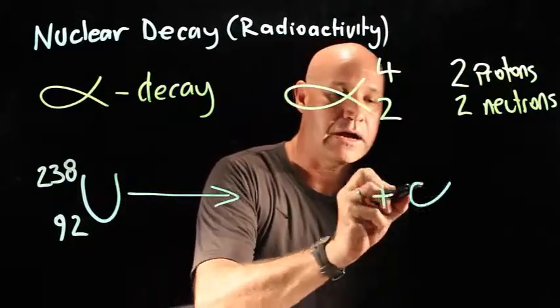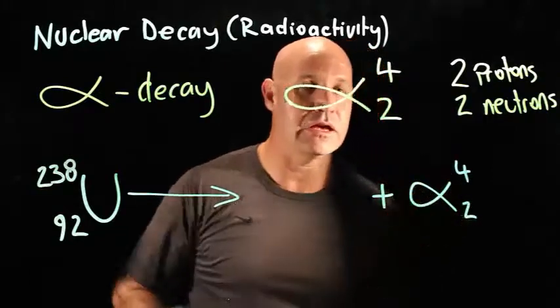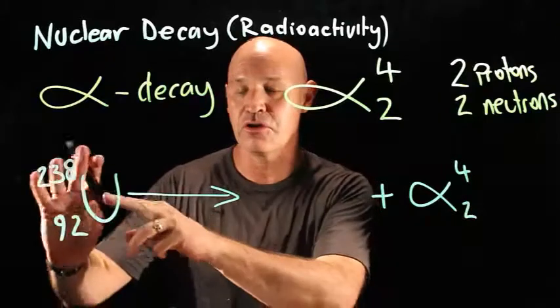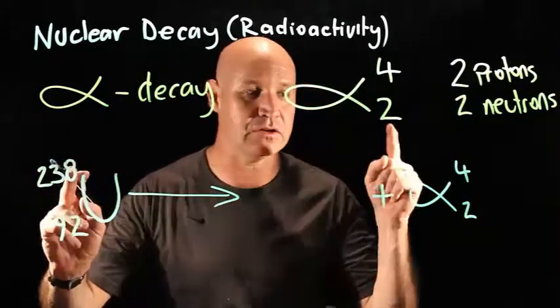I'm going to firstly draw our alpha particle with the mass and the atomic number. Now the nucleus of this uranium isotope has ejected this.